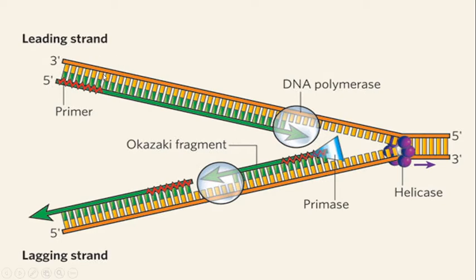DNA Polymerase 3 works at the 3 prime end, adding nucleotides to create the new DNA strand. The new strand made in the 5 to 3 prime direction, continuously elongating toward the replication fork — this strand is called the leading strand.